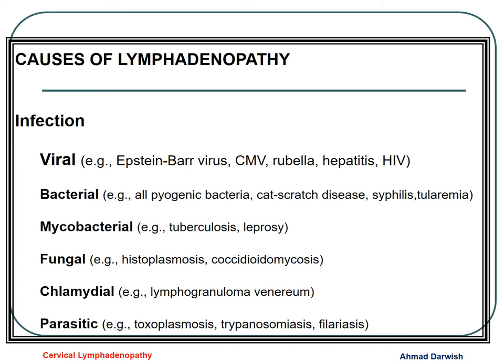The most common cause of lymphadenopathy in children is infection, and the most common infection is viral, especially Epstein-Barr virus and infectious mononucleosis. But we have other infections like cytomegalovirus, rubella, hepatitis, and HIV. We also have bacterial infections like cat scratch fever, Streptococcus and Staphylococcus — the pyogenic bacteria — and mycobacteria TB, and fungal like histoplasmosis, chlamydia, toxoplasmosis, and other parasites.